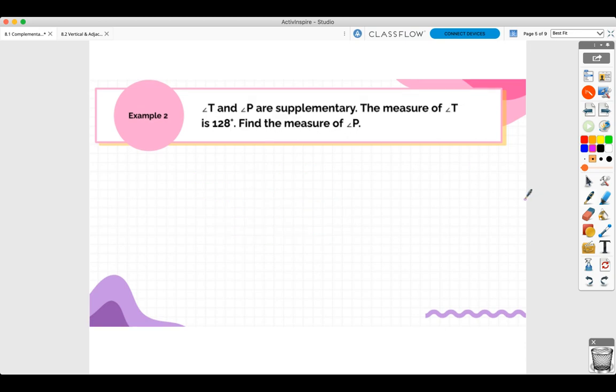T and P are supplementary. The measure of angle T is 128. So we know that angles T plus angle P are supplementary, which is 180. So if angle T is 128, I'm just going to replace angle T with 128. Find the measure of angle P. So 128 plus angle P is 180.